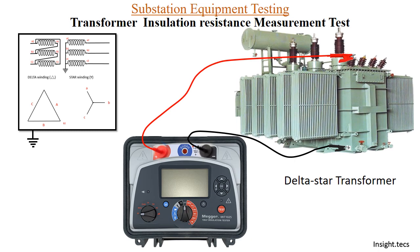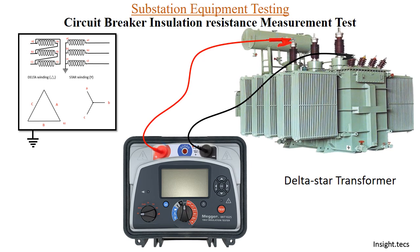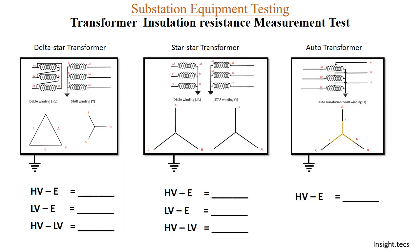For LV to earth at ten minutes, the reading is 4.20 giga ohms. The third reading is for HV to LV, so we change connections accordingly from HV to LV, set to 5 kV, and take the measurement. For one minute we get 3.63 giga ohms, and for ten minutes we get 7.18 giga ohms. For the delta-star transformer we take three readings: HV to earth, LV to earth, and HV to LV. Similarly for star-star, three readings; for auto transformer, only one reading — HV to earth.